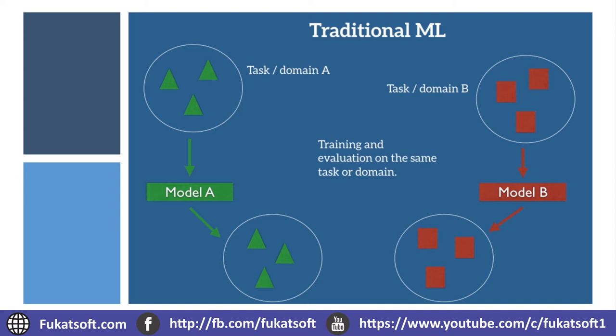Two problems come up here: first, we have to define an architecture every time, and then we have to train it from the beginning. That requires a lot of data, because if you want to get good accuracy you have to train on thousands or maybe millions of images. That's where transfer learning comes in.